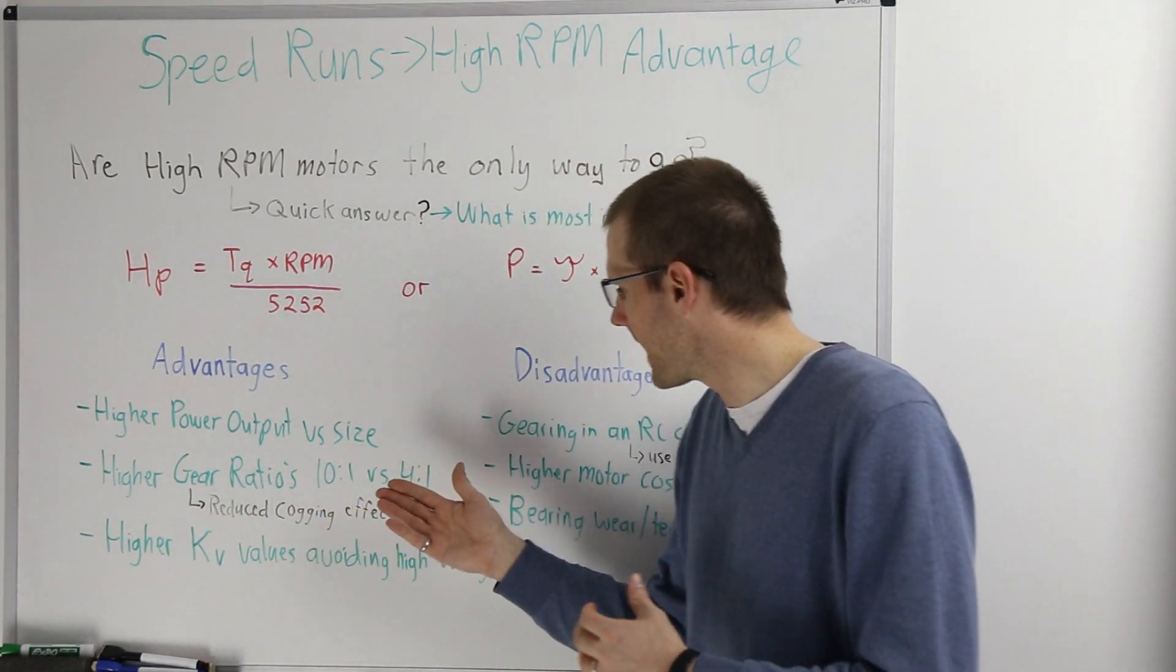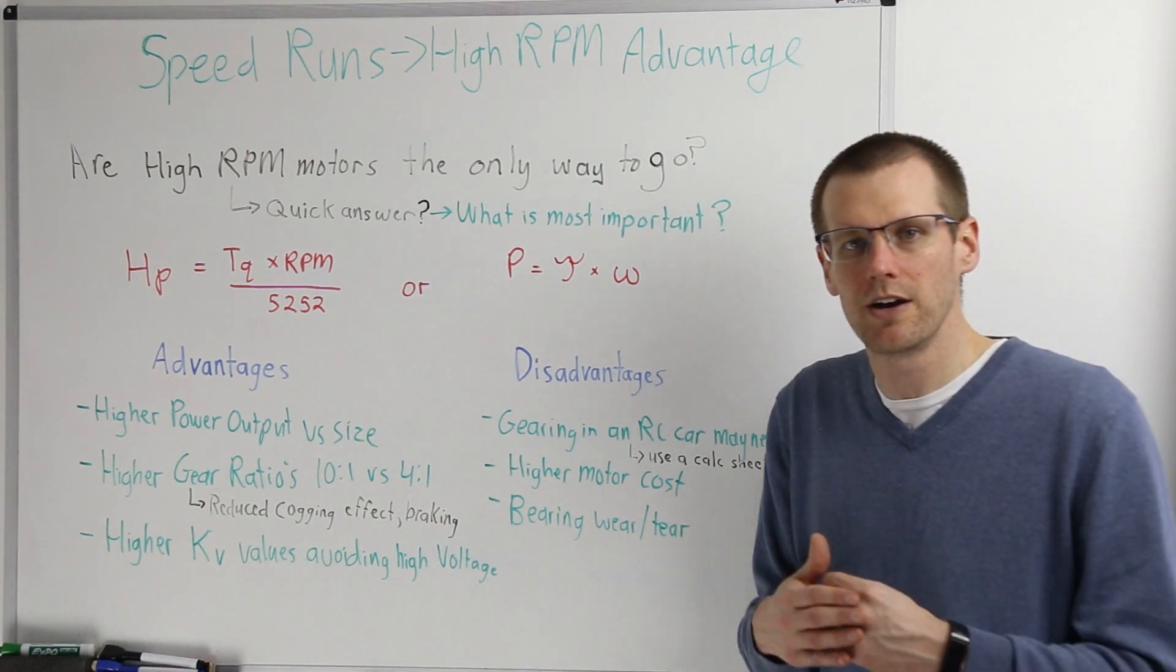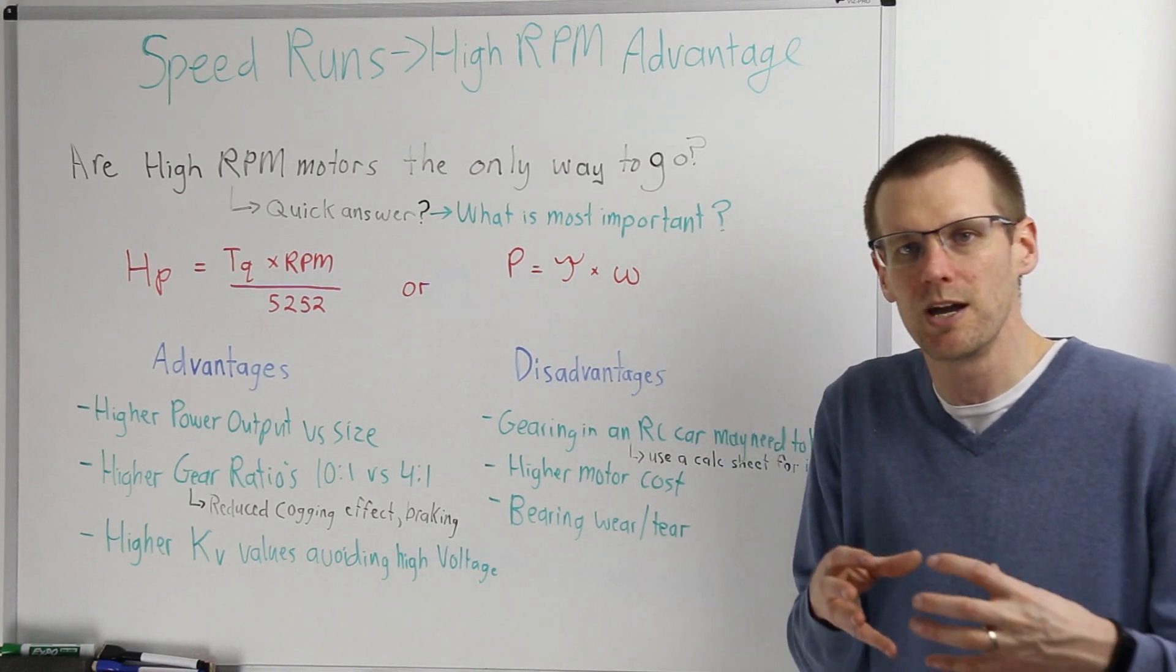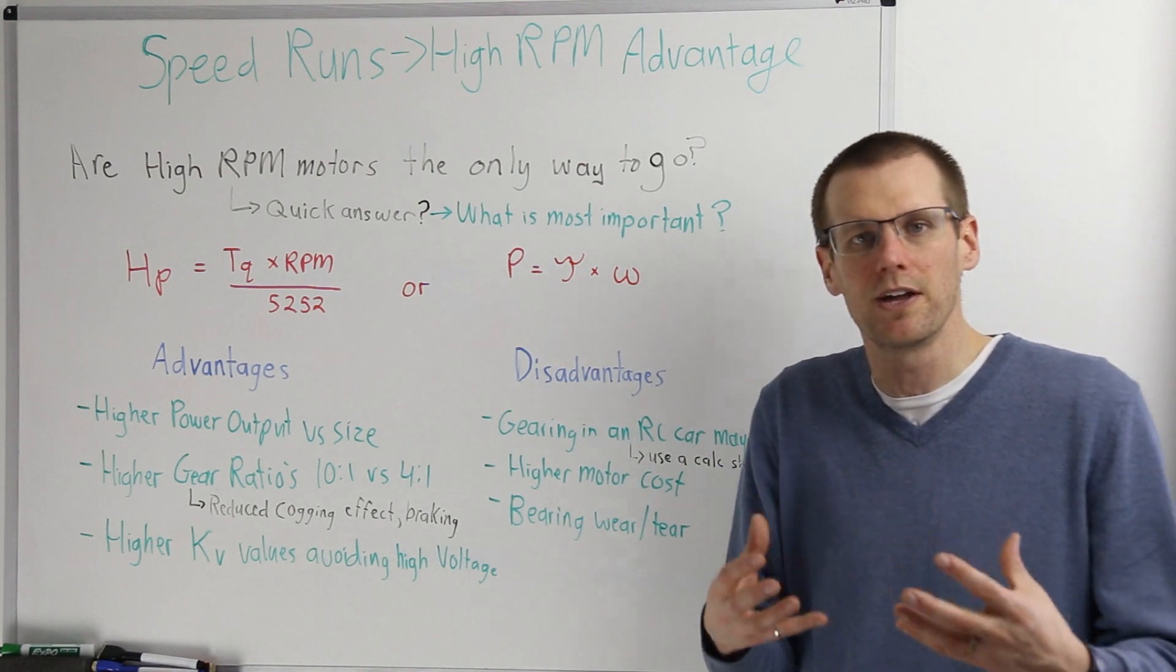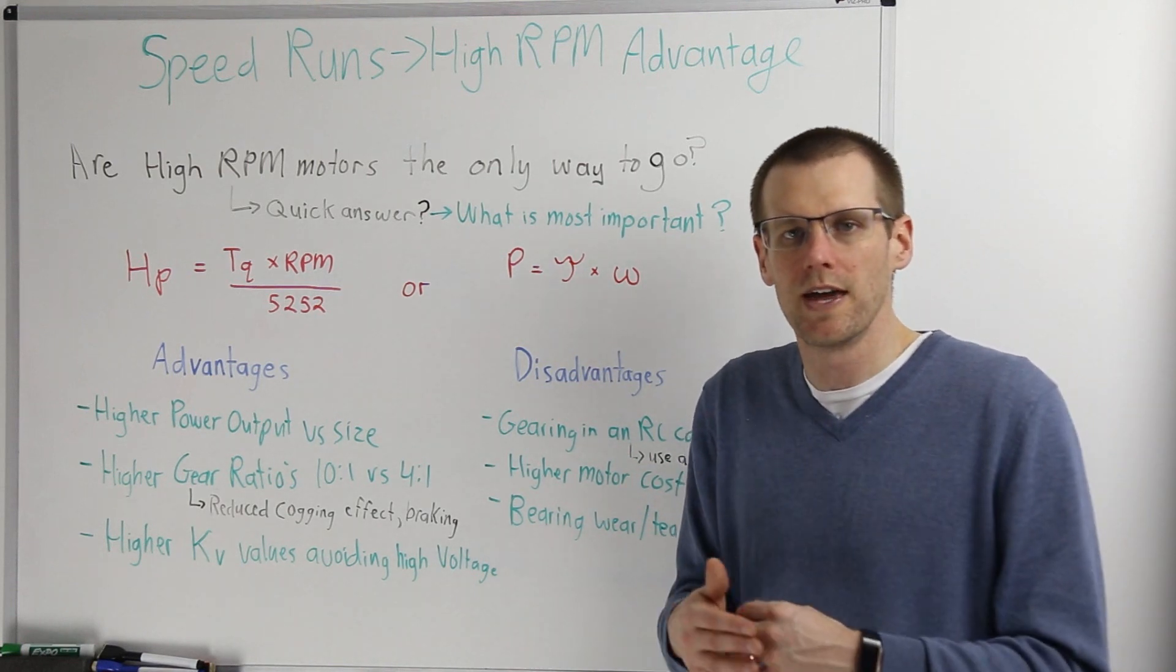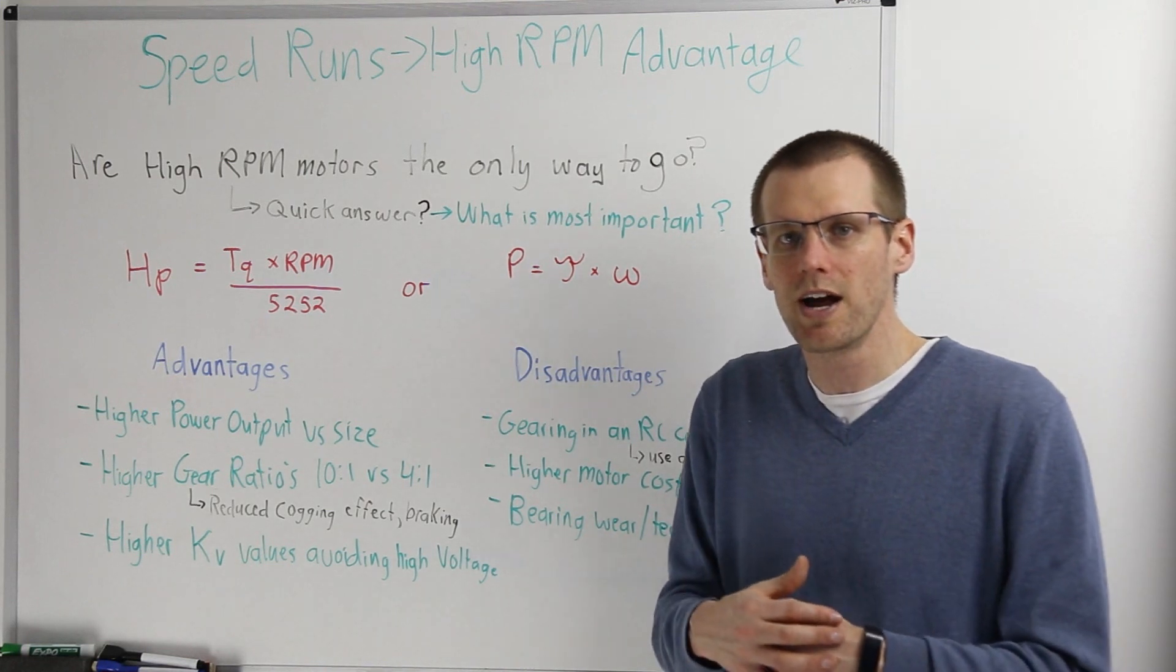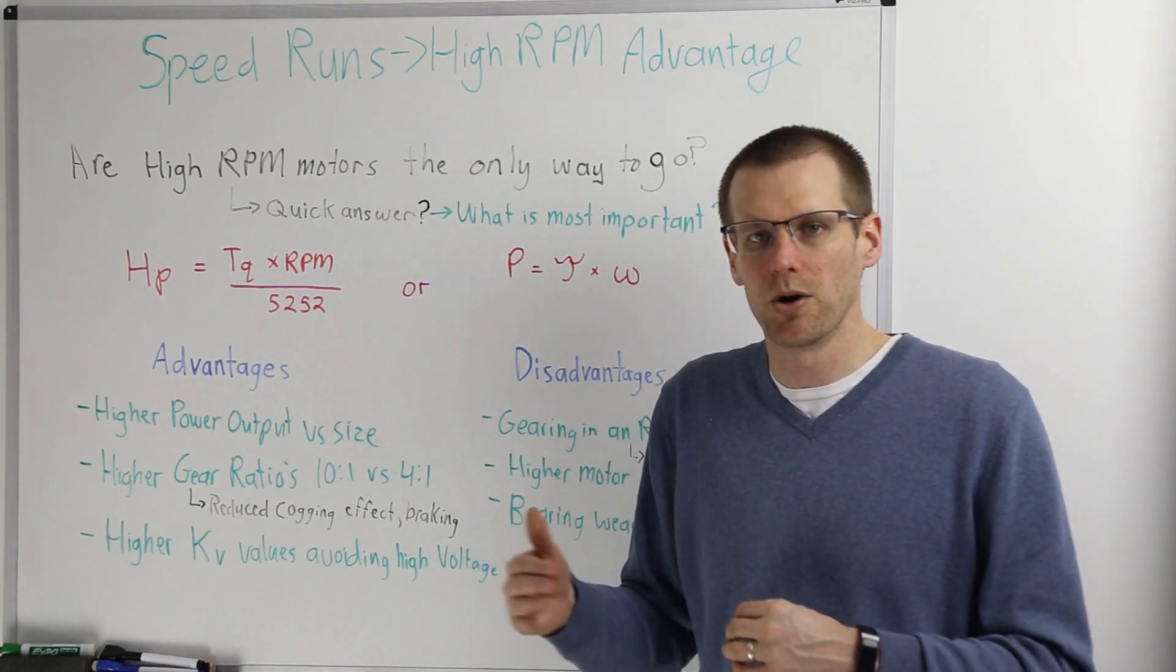And the last disadvantage here up on the board deals with bearings and wear and tear. Now we would expect that a bearing that has to go through more RPM type abuse is going to have some wear and tear on it, leading to potential failures, maybe a little bit quicker than your typical motor. I personally have not encountered this. However, I don't have a lot of hours on any of my high speed RPM type motors.